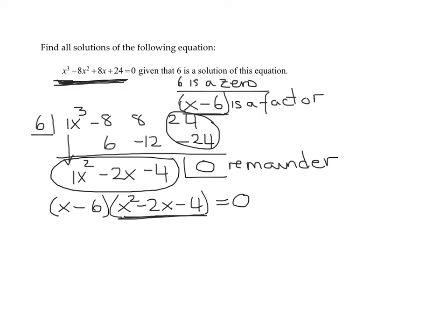And remember, in this case, what is a? a is 1. b is negative 2. That's the coefficient of the x. And the constant is negative 4. So, the quadratic formula x equals negative b plus or minus the square root of b squared minus 4ac all over 2a. Now, it's just plug and chug time.